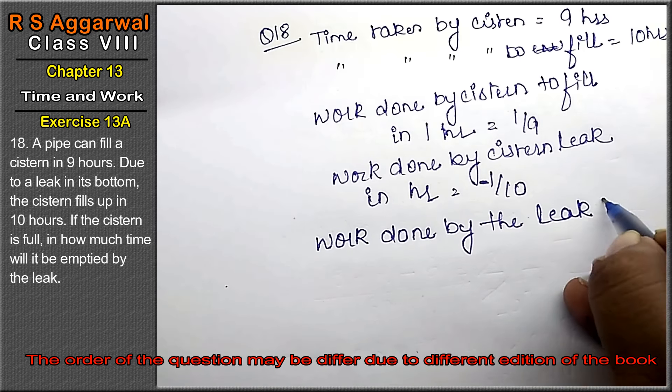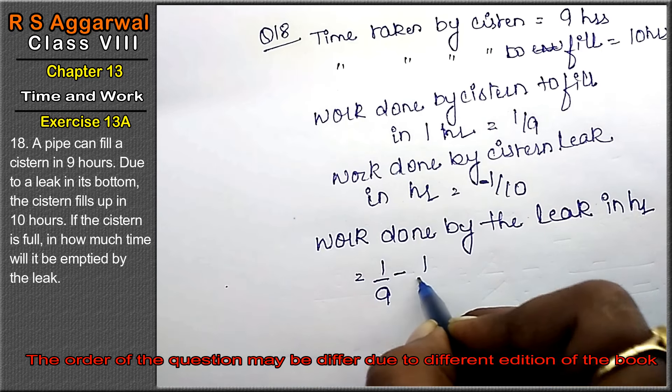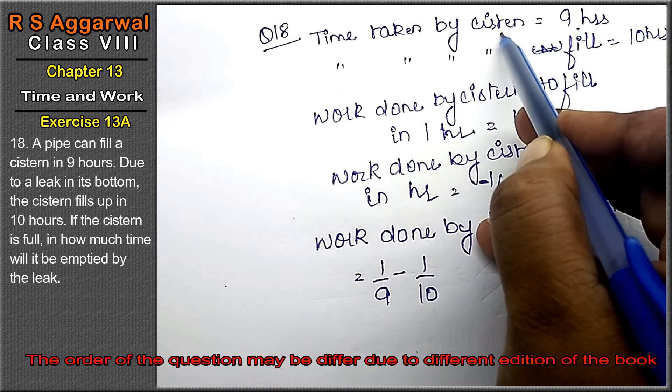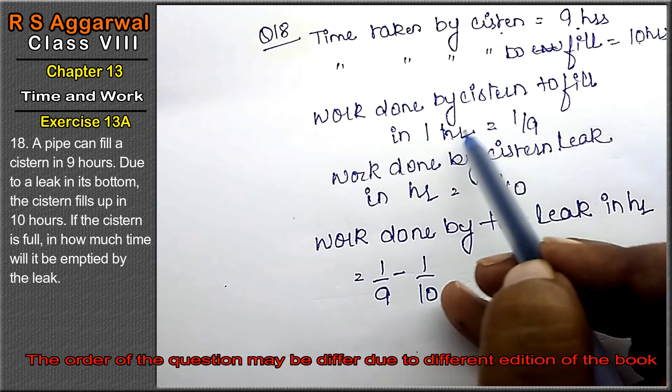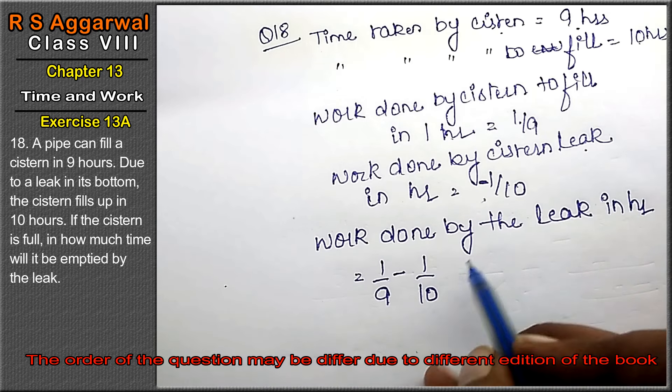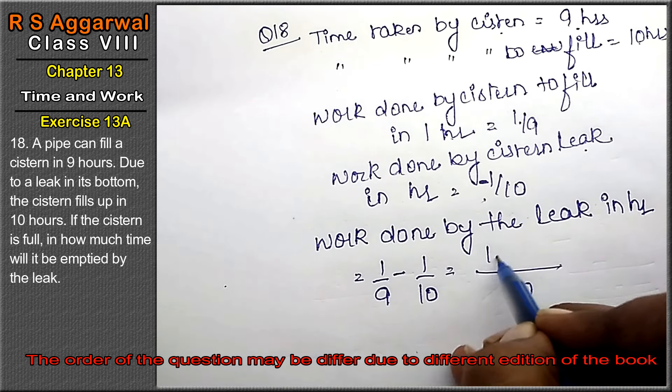in one hour equals 1 upon 9 minus 1 upon 10. Friends, it takes 9 hours to fill, but because of leakage it takes 10 hours to fill. So work done is 1 upon 9 and work done by leak is minus 1 upon 10. Taking LCM, we get 10 minus 9, that is 1 upon 90.